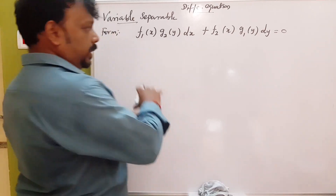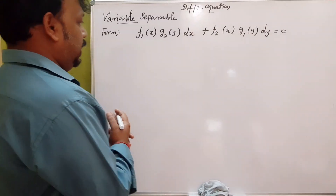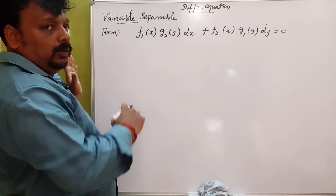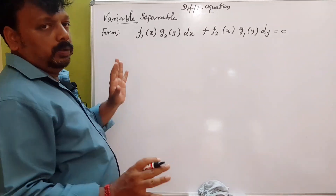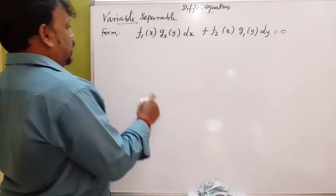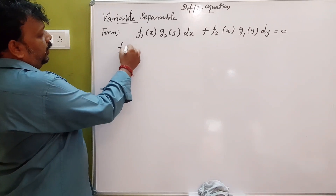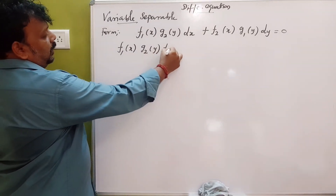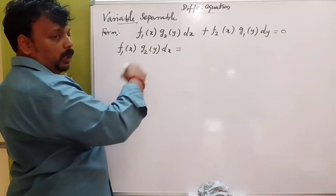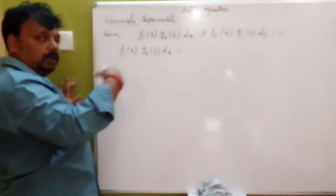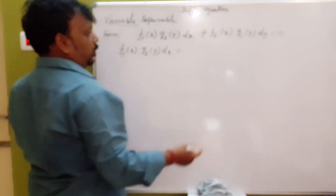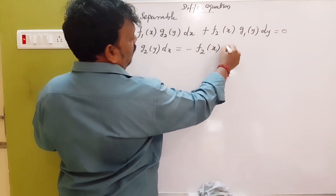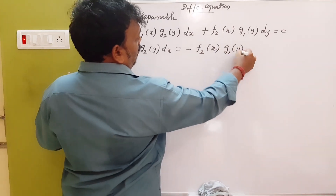The first step is to create the equation. You can write the equation such that the left-hand side equals the right-hand side. Starting with F1 of x, G2 of y, and dx — you can separate both dx and dy terms, adding G1 of y and dy on the appropriate side.